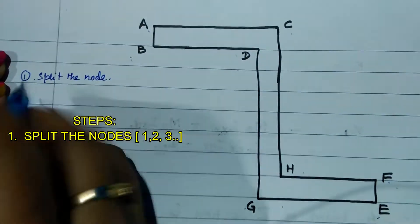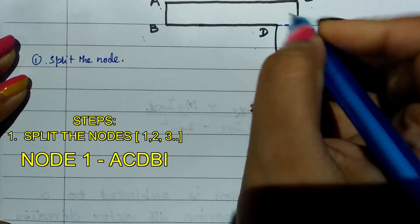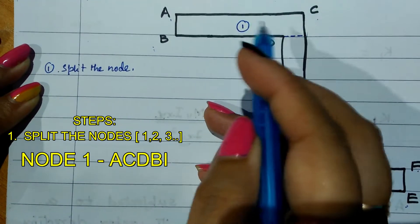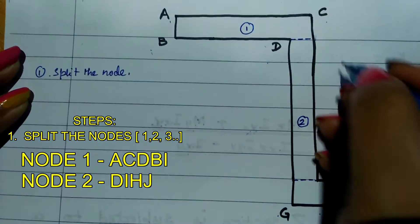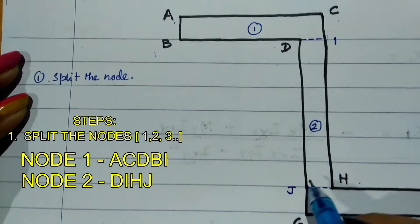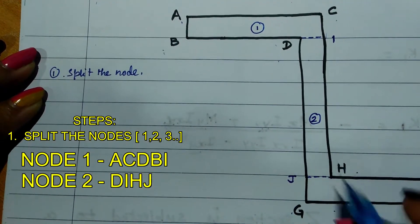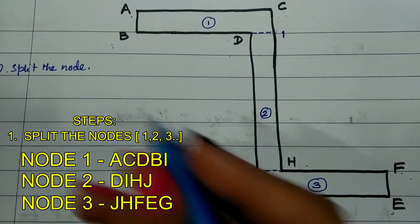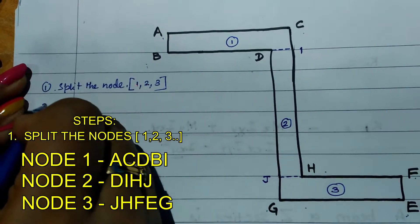Splitting the nodes: the top flange forms node 1, one rectangular bar. The web region — bounded by lines G, F, I and joined with an imaginary line J — forms node 2. The bottom flange, J-H-F-E-G, forms node 3. So we split the Z-section into nodes 1, 2, and 3.